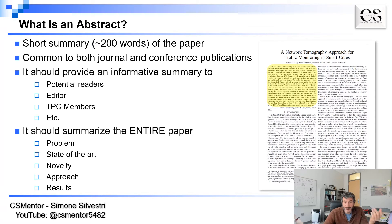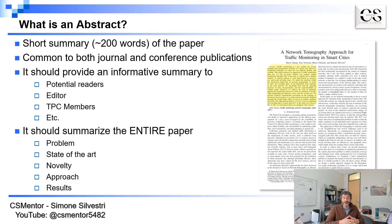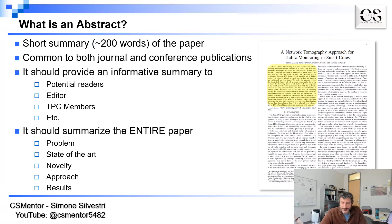An abstract is a short summary of the paper. Some conferences and journals have limitations on the number of words you can use — a typical limitation is no more than 200 words. However, even if the abstract is short, it should be significantly informative. Many people read the abstract, sometimes more than you would expect. If you are looking for a paper on a certain topic and the title sounds relevant, the next thing you read is the abstract to see if the paper is actually about the topic you are interested in.